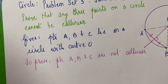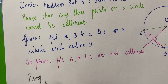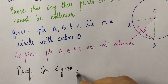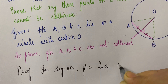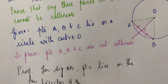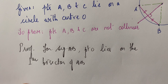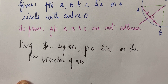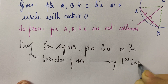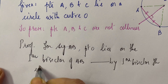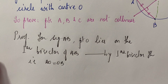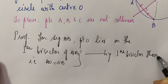In your proof, you will write it as: for segment AB, point O lies on the perpendicular bisector of AB. How is point O? It lies on the perpendicular bisector of segment AB — this is by the perpendicular bisector theorem. That is, if it is lying on the perpendicular bisector of AB, that means AO is equal to OB. The reason is by perpendicular bisector theorem.